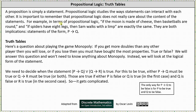For example, in terms of propositional logic, 'if the moon is made of cheese then basketballs are round' or 'if spiders have eight legs then Sam walks with a limp' are exactly the same. They're both implications, which are statements in the form of if p then q.